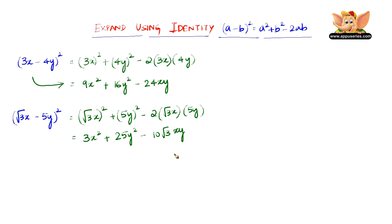So we have the expansion of (√3x - 5y)² is equal to 3x² + 25y² - 10√3 xy.